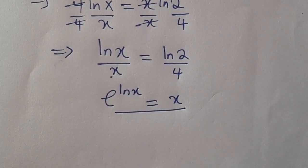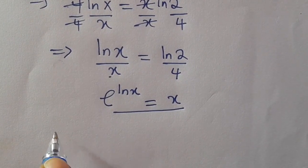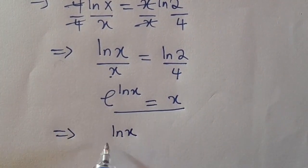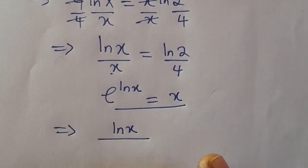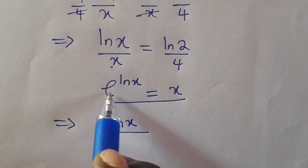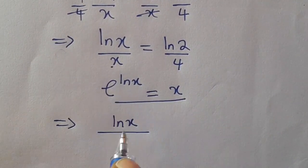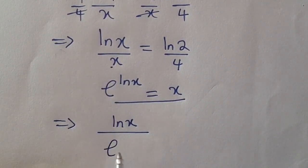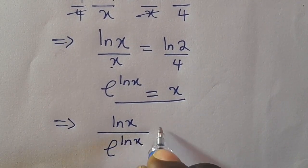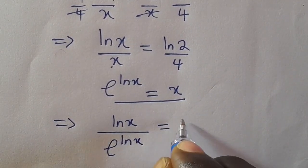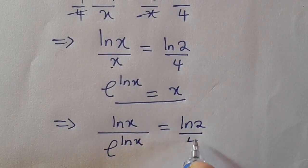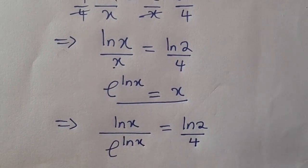So by applying this, which means we are going to have ln(x) divided by — instead of this x, we can substitute it with e raised to ln(x). Then we are going to have ln(x) divided by e raised to ln(x) equals ln(2) divided by 4.